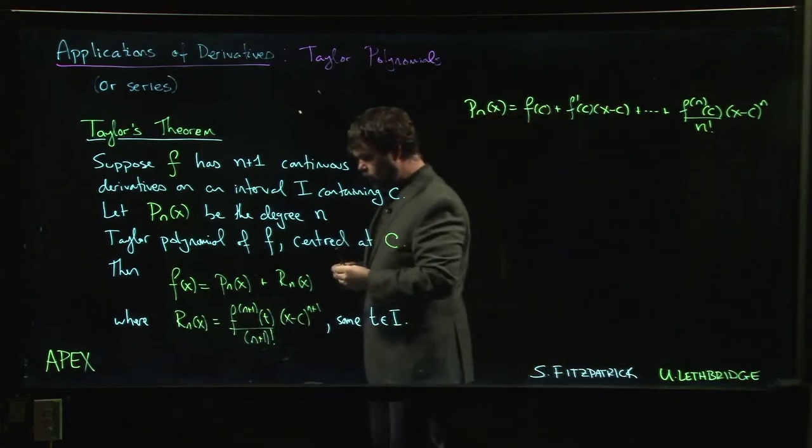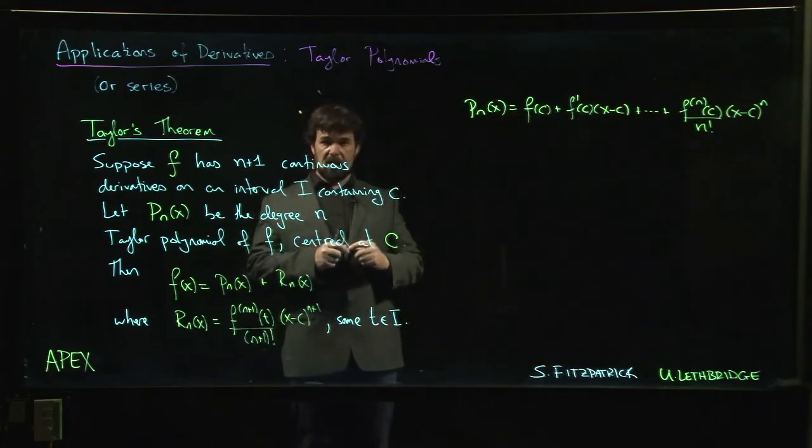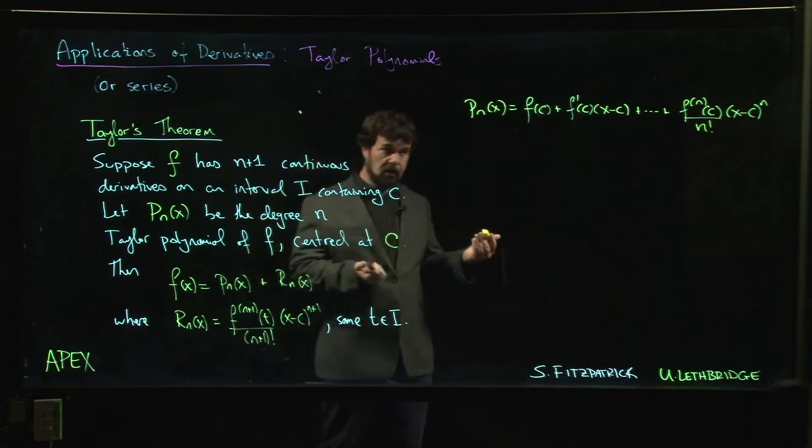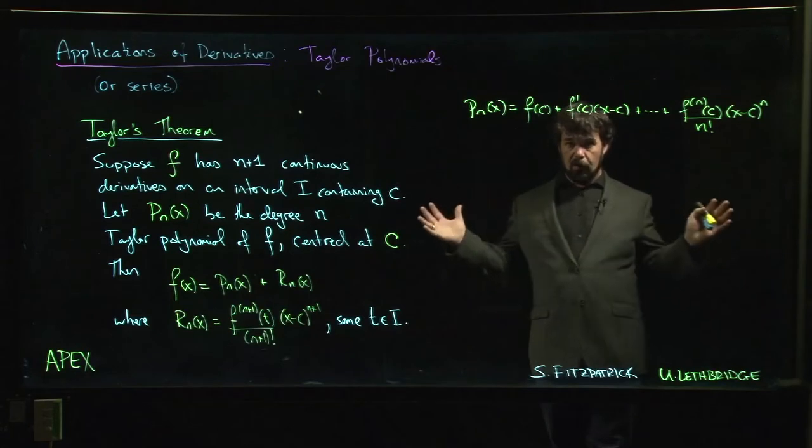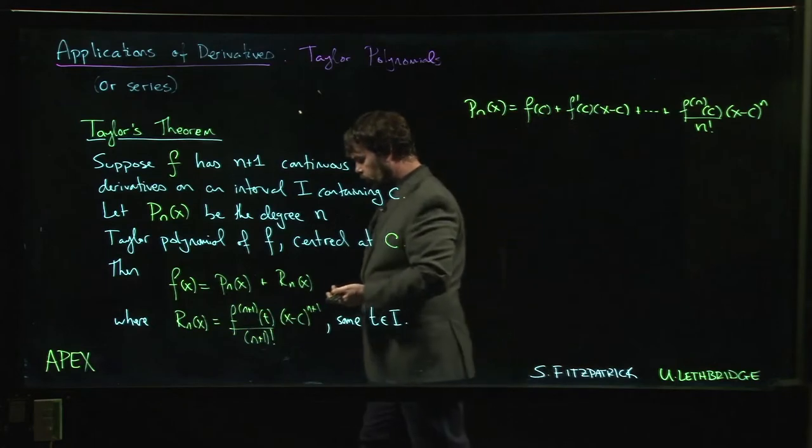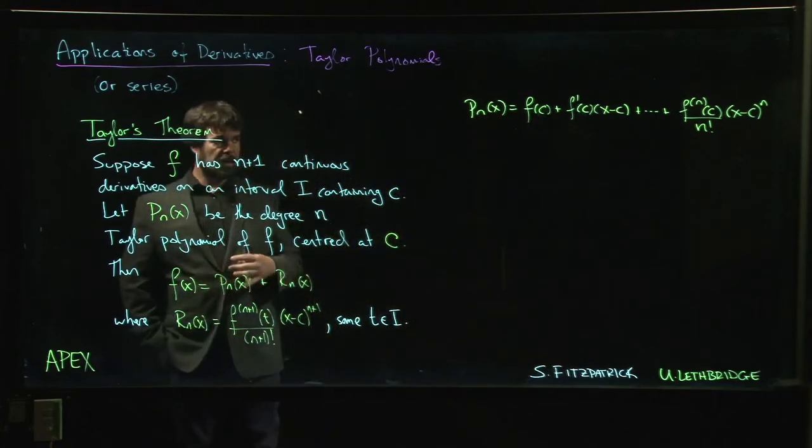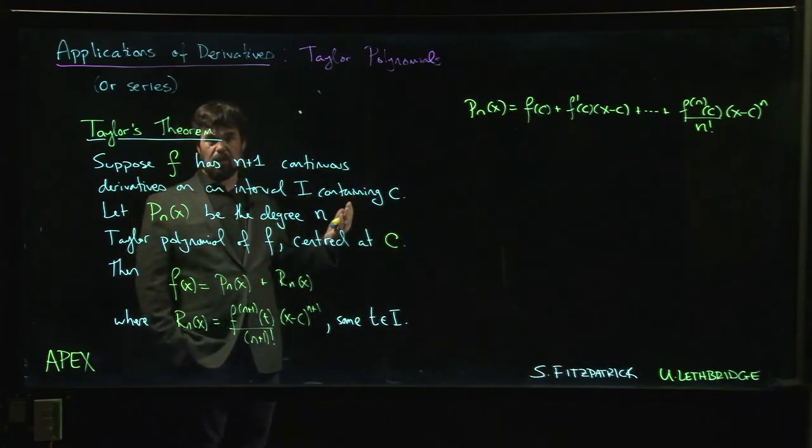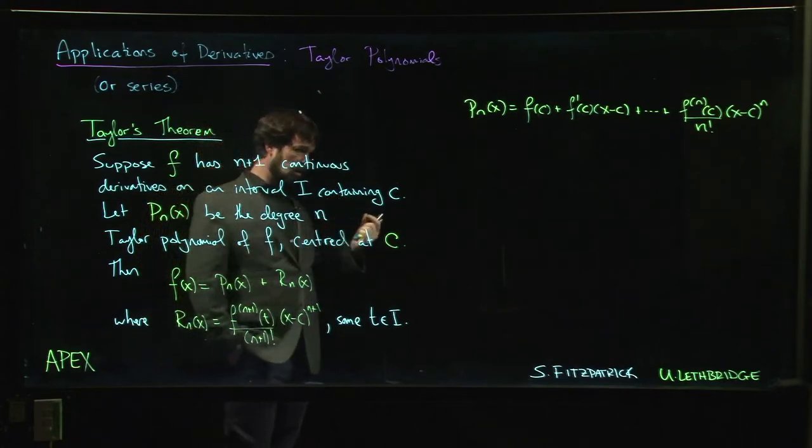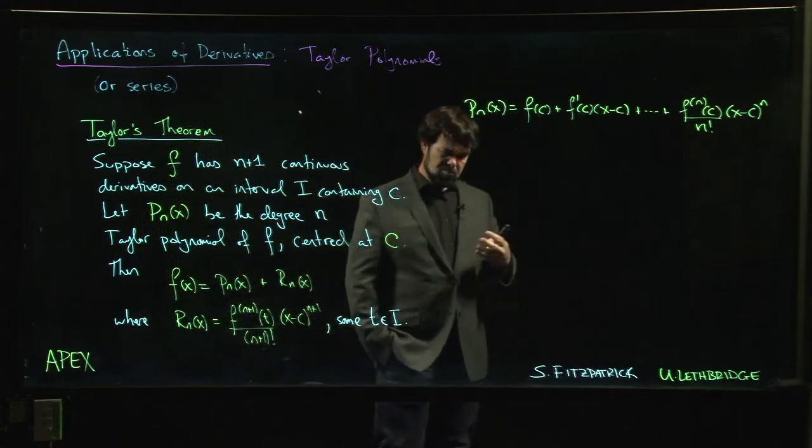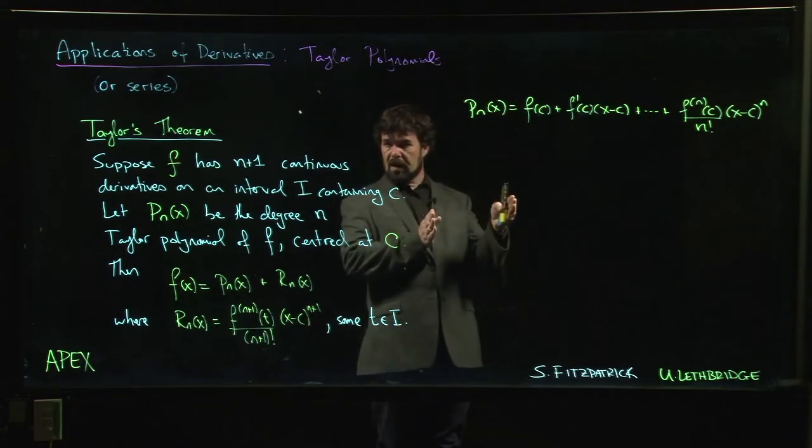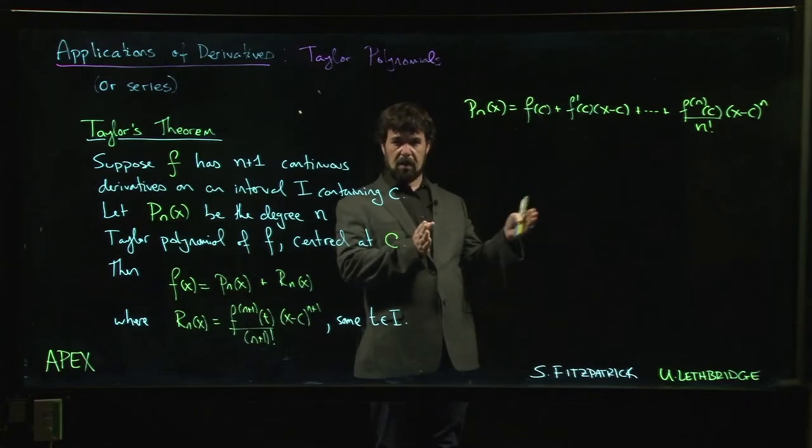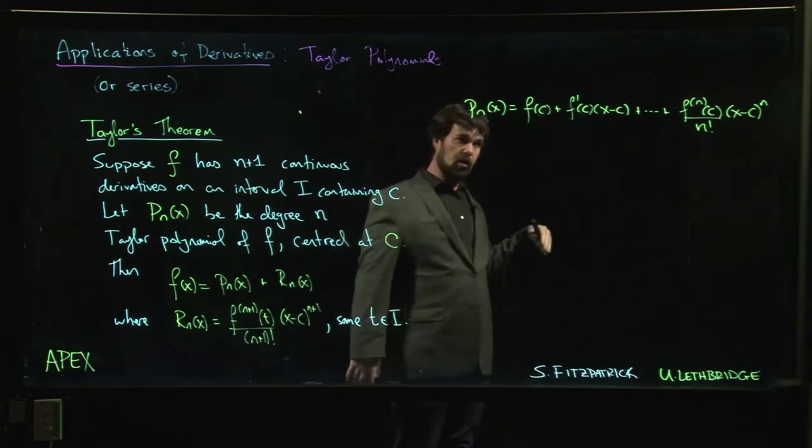We've seen that there are some functions like trigonometric functions where these Taylor polynomials actually approximate very well over a fairly wide range of values. There are other functions like natural logarithm where these don't work as well. Over a small interval, not too bad, but there's always a point where you move just a little bit further away and suddenly the approximation is terrible.